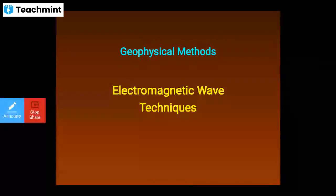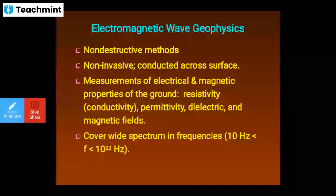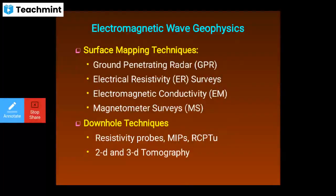Electromagnetic wave geophysics is non-contact, conducted at the surface. It measures electrical and magnetic properties of the ground: resistivity, conductivity, permittivity (dielectric), and magnetic susceptibility. It covers a wide spectrum of frequencies across many orders of magnitude (10⁻¹ to 10¹⁰ Hz), including ground penetrating radar (GPR), electrical resistivity (ER) surveys, and electromagnetic conductivity (EM).